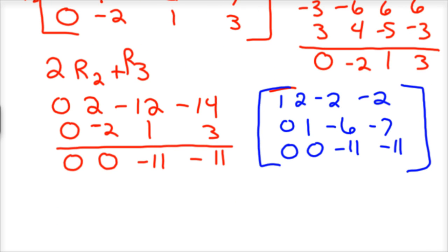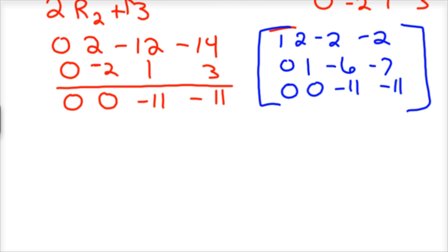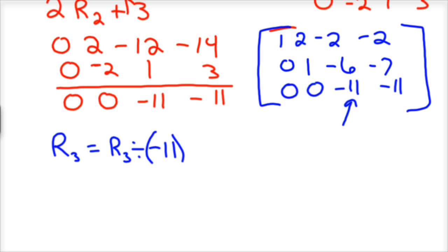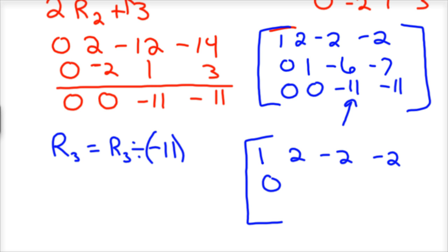We're just about done here. The last thing we need to do is get a positive 1 in the lower right diagonal position. We can just divide by negative 11. So for a new row 3, take row 3 divided by negative 11. My row echelon form would be: 1, 2, negative 2, negative 2; 0, 1, negative 6, negative 7; and 0, 0, 1, 1.